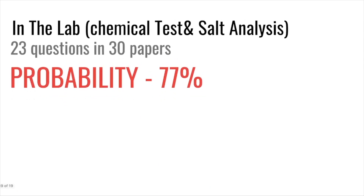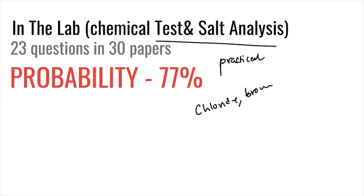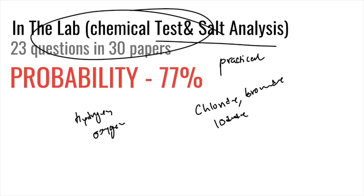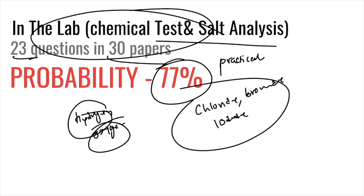Lab and chemical tests (salt analysis) is less commonly tested — 23 questions in 30 papers — giving a 77% chance of appearing. It covers Group 17 ion tests (chloride, bromide, iodide and their colors), apparatus identification (burette, thermometer, beaker, measuring cylinder), and chemical tests like the hydrogen test, oxygen test, and what happens when ammonia meets damp litmus paper.